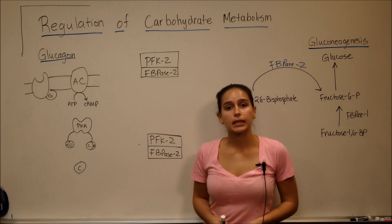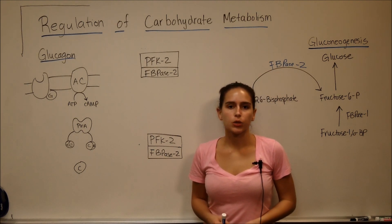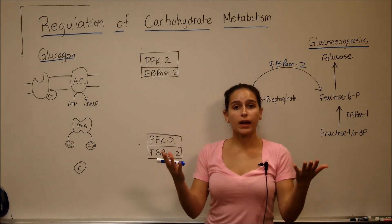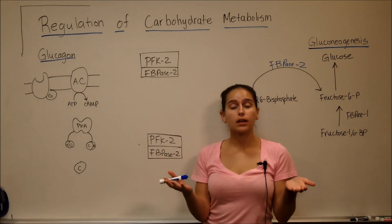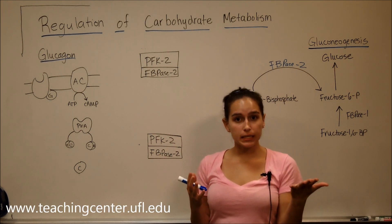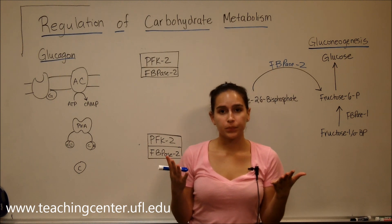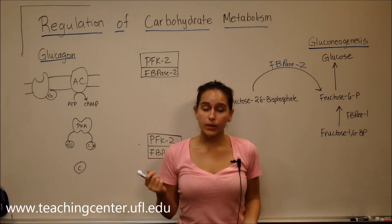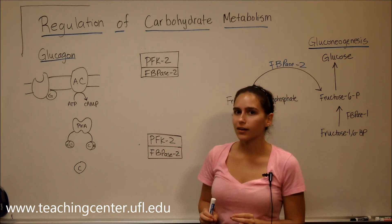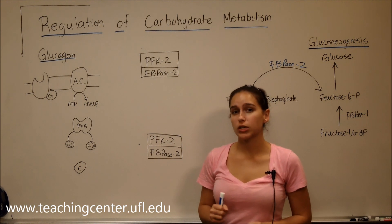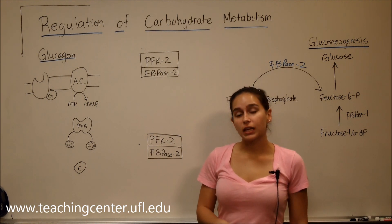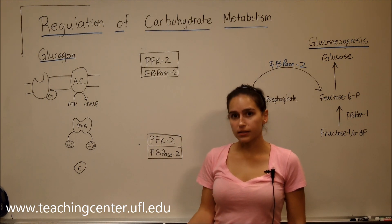Today we're going to talk about regulation of carbohydrate metabolism. The two main factors in regulating carbohydrate metabolism are the hormones insulin and glucagon. When you hear the word glucagon, you always have to think gluconeogenesis. Likewise, when you hear insulin, you always have to think glycolysis.